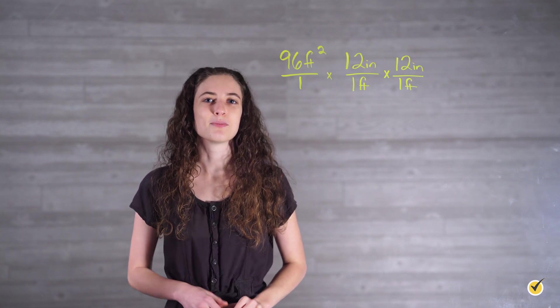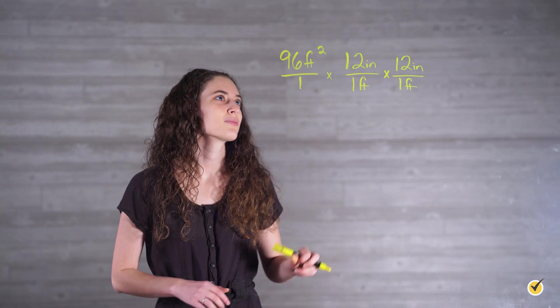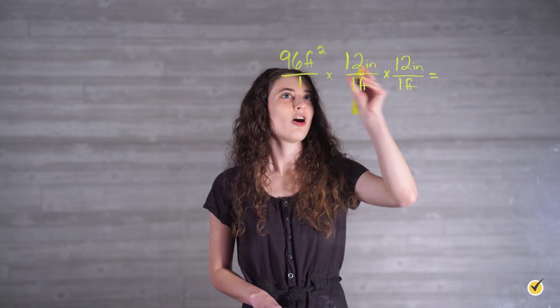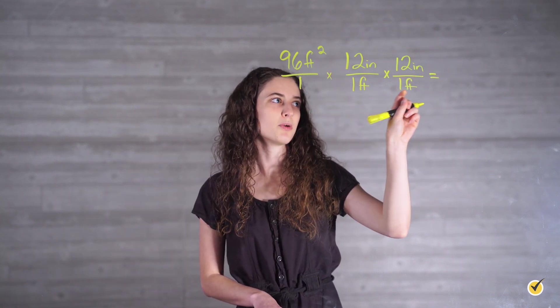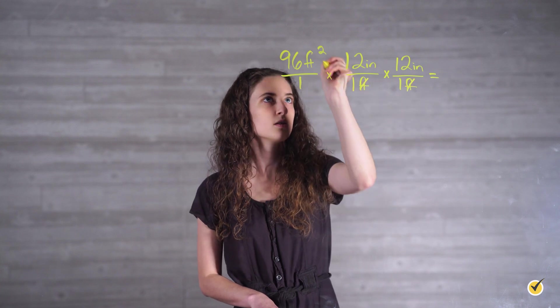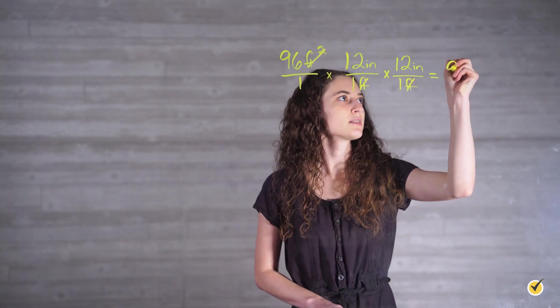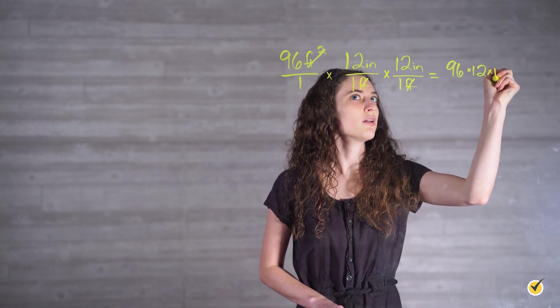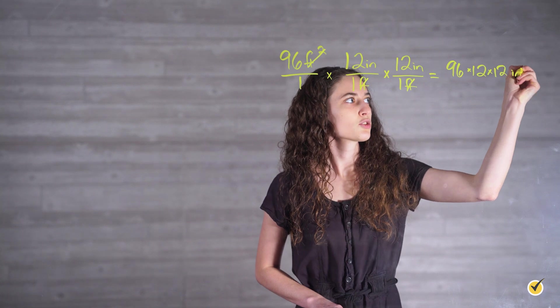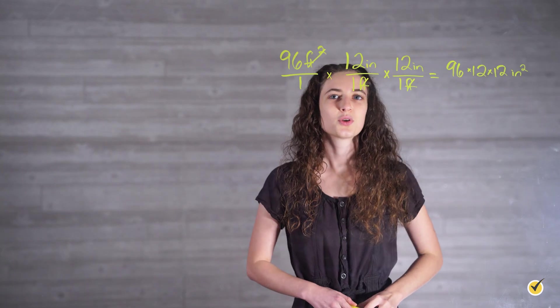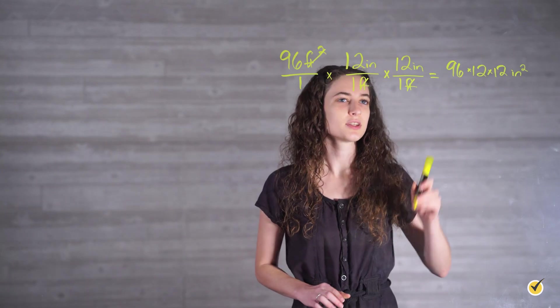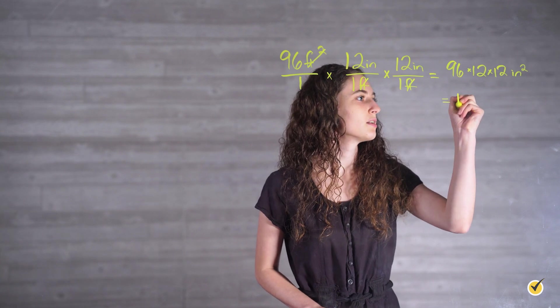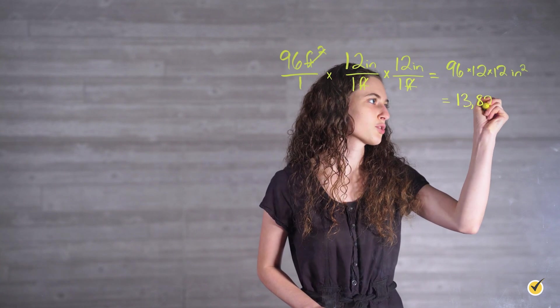Let's finish out our problem by multiplying it all out. Our feet squared will cancel out with both of our feet down here. So we're left with 96 times 12 times 12 square inches. When we multiply this out, we'll get an answer that is equal to 13,824 square inches.